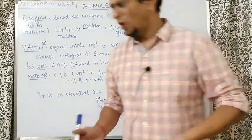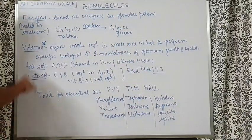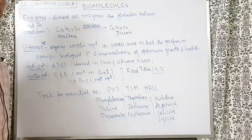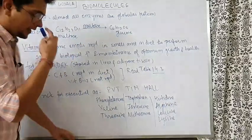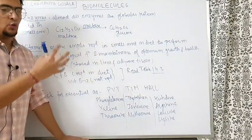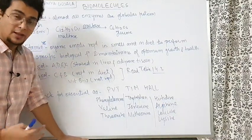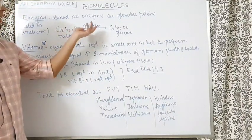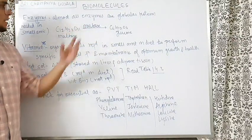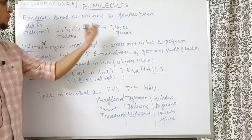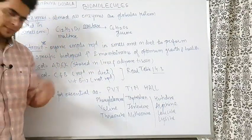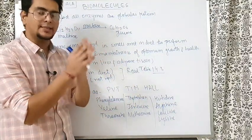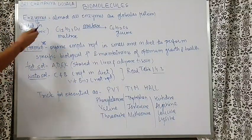Enzymes is a very commonly used term — they are biocatalysts needed in small amounts to drive biological reactions faster. Almost all enzymes we know are globular proteins. Naming can be done on the basis of the process they do; for example, oxidation-reduction enzymes are called oxidoreductases. Enzymes are also named on the basis of the reactant — maltose in the presence of maltase gets hydrolyzed to form glucose. Enzymes lower the activation energy, as you have read in the surface chemistry and chemical kinetics chapters.